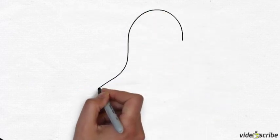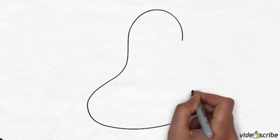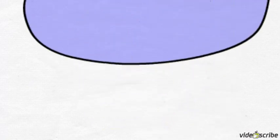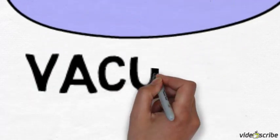The vacuole contains cell sap. It is a storage vesicle inside the cell where the cell can store sugars and other substances.